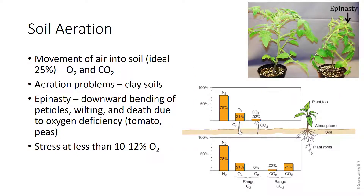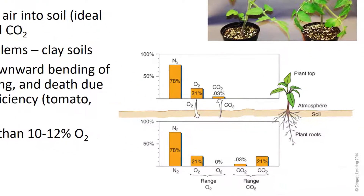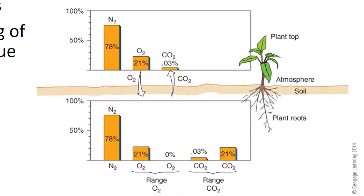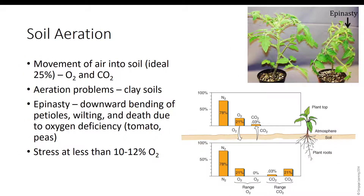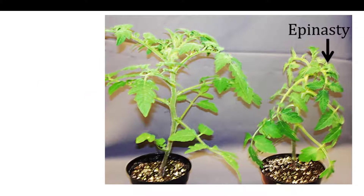Soil aeration is the movement of air into the soil. In general, a mineral soil contains about 25 percent air. Keeping soils well aerated is important for maintaining the proper balance of oxygen and carbon dioxide. High levels of CO2 in the soil are toxic, and low levels of oxygen inhibit root growth. Clay soils are highly susceptible to aeration problems, whereas sandy soils are typically well aerated. Both tomato and pea plants are susceptible to oxygen deficiencies; they will show signs of epinasty, which is the downward bending of the petioles, wilt, and eventually die if the problem is not corrected.